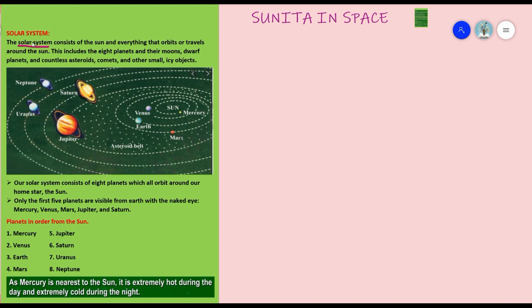The solar system is named after the sun because the sun is the center. It includes planets and their moons — there are eight planets, and just like Earth has a moon, other planets also have moons. There are also dwarf planets, some smaller planets, and countless asteroids, comets, and other small icy objects. All these things revolve around our sun.